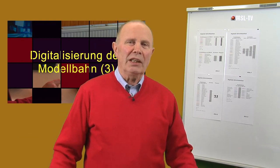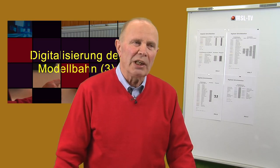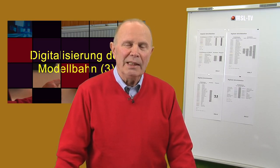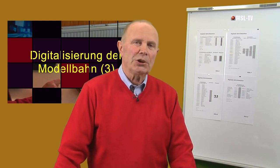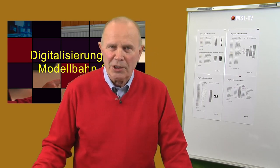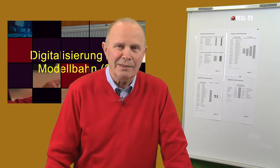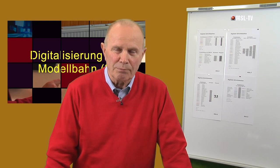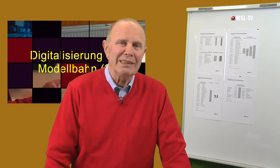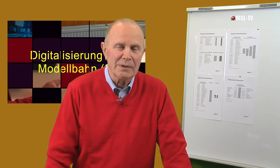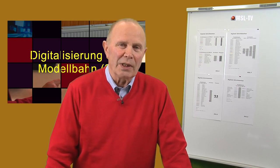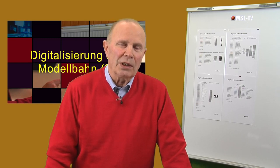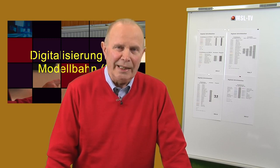Moderne Lokomotiven – ich nenne mal einen Zeitraum – die jünger sind als 20 Jahre, die tragen eine Schnittstelle. Eine Schnittstelle ist Fachjargon und heißt ganz einfach ins Deutsche übersetzt eine Steckdose für den Decoder. Früher musste man Decoder grundsätzlich einlöten, heutzutage gibt es dort eine Steckdose, eine Schnittstelle, und da können wir den Decoder einstecken.